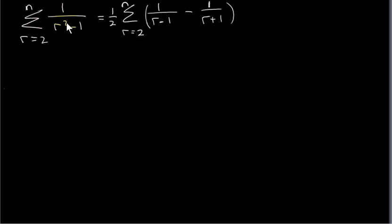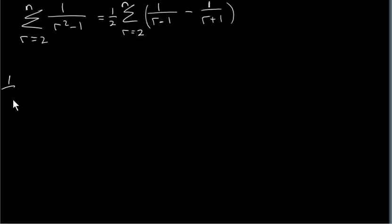In the last video, we looked at this series here and saw that it's not geometric or arithmetic. I also explained how to write this fraction in terms of its partial fractions. So what we will do in this video is look at terms of this series by using this partial fraction form. We have a half times sigma from r equals 2 to n of this expression here.